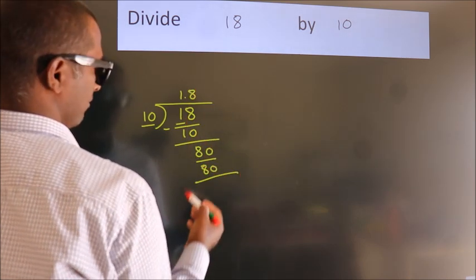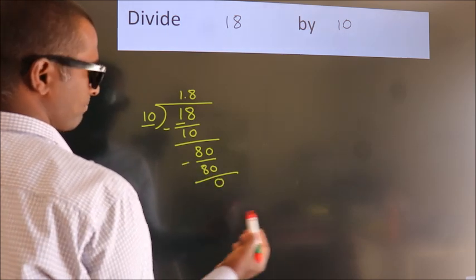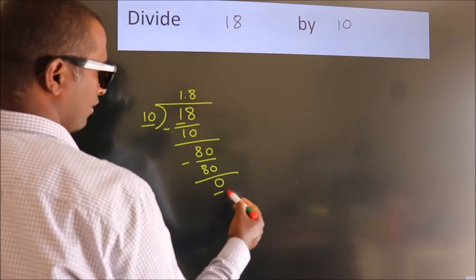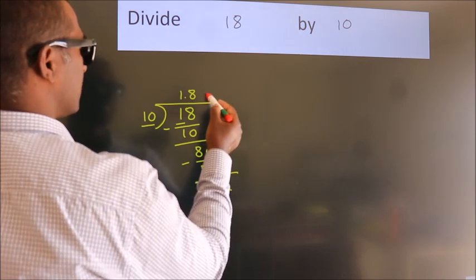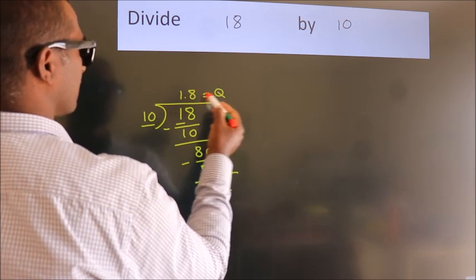Now we subtract and get 0. Here we got remainder 0. So this is our quotient: 1.2.